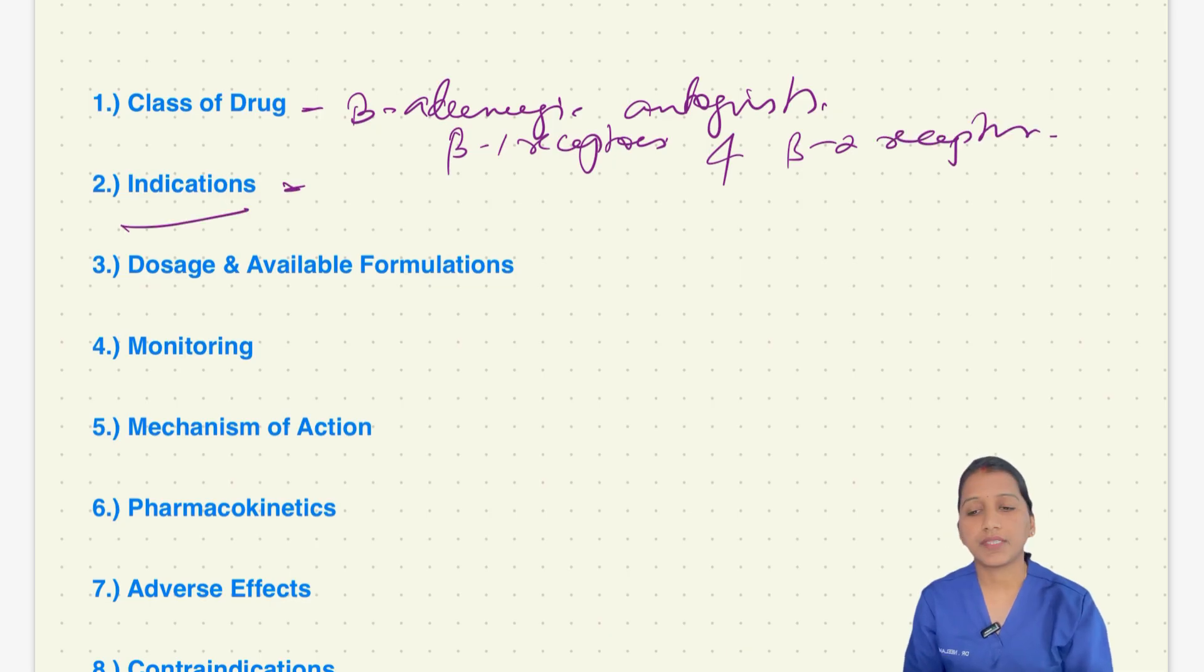Next, coming to indications, the most common indication for use in emergency department is for supraventricular tachycardias including atrial fibrillation with fast ventricular rate and atrial flutter.